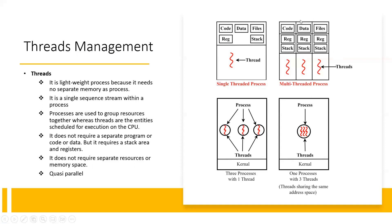Here is another process — another data file and program under execution, which has become a process. We say that it has three different threads generated, meaning more than one thread has been generated. So we say that this process is a multi-threaded process. If one thread is generated, it is a single-threaded process; if multiple threads are generated, it is a multi-threaded process.